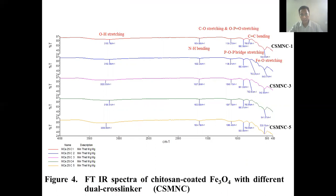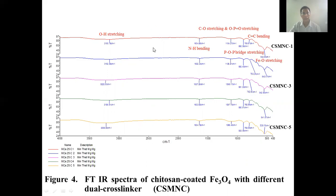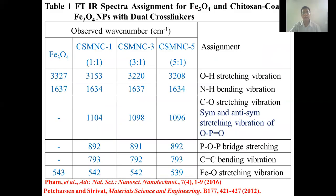The figures show the FTIR spectrum of chitosan-coated Fe3O4 with different cross-linking agents. The band at 543 cm⁻¹ was confirmed at the Fe-O stretching vibration. The presence of TPP functional group was shown by the absorption of P-O-B stretching appearing in the fingerprint area at 892 cm⁻¹. The band at 1134 cm⁻¹ was attributed to P-O-B stretching vibration.